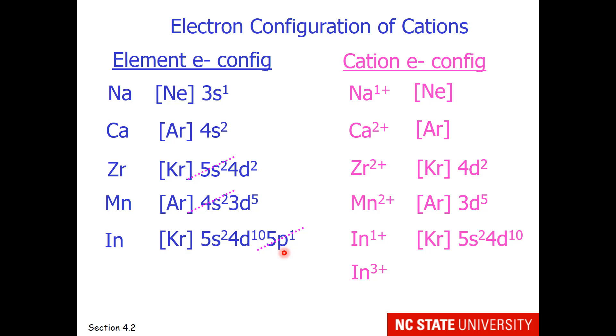If we would like to make indium 3 plus, we will remove the 5p electron and the 5s electron, because the highest principal quantum numbers are lost first. So this electron configuration will be krypton, 4d10.